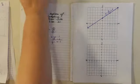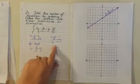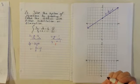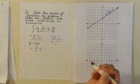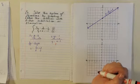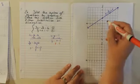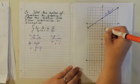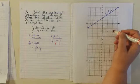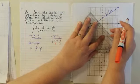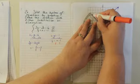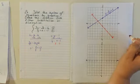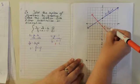Now we're going to graph our other line in a different color. We have y equals negative x minus 1. Our slope is going to be negative 1, which means that as x increases 1, y is going to decrease 1. Our y-intercept is negative 1, so where x is 0, y is negative 1. We're going to stair-step down that way. We'll draw our line and label it: y equals negative x minus 1.